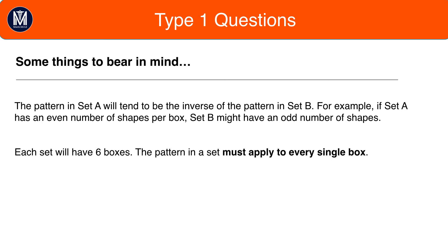So for example, Set A might have double the number of black shapes than white shapes and Set B might have one more white shape than black shape. So even though this is not a direct inverse, this is still related to the same topic of colour.